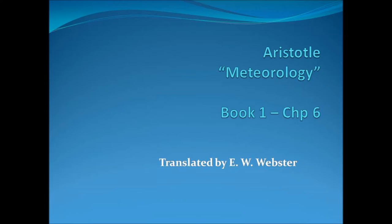Further, comets are often found to appear as well when all the planets are visible as when some are not, but are obscured by the neighborhood of the sun. Moreover, the statement that a comet only appears in the north with the sun at the summer solstice is not true either. The great comet which appeared at the time of the earthquake in Achaia and the tidal wave rose due west. And many have been known to appear in the south.